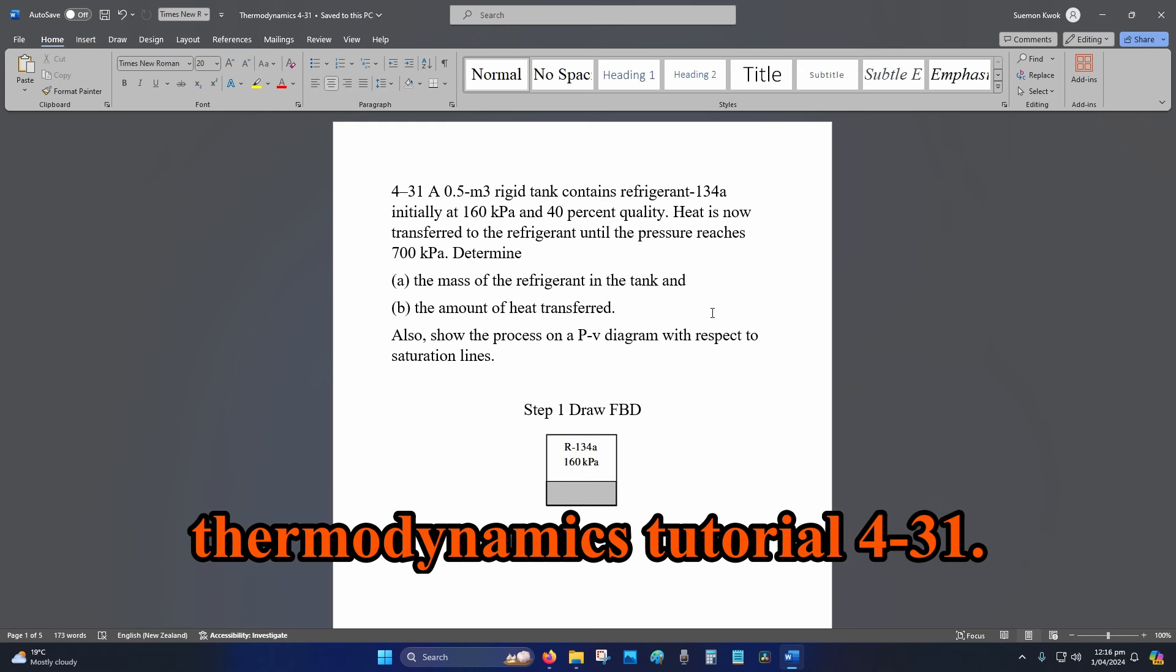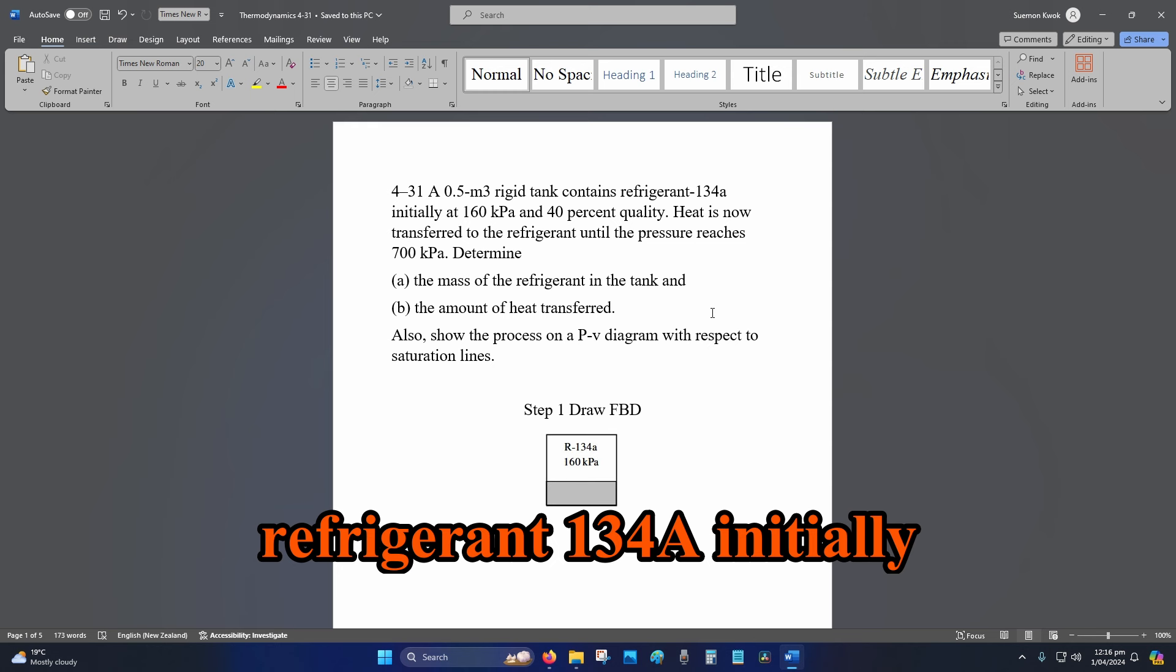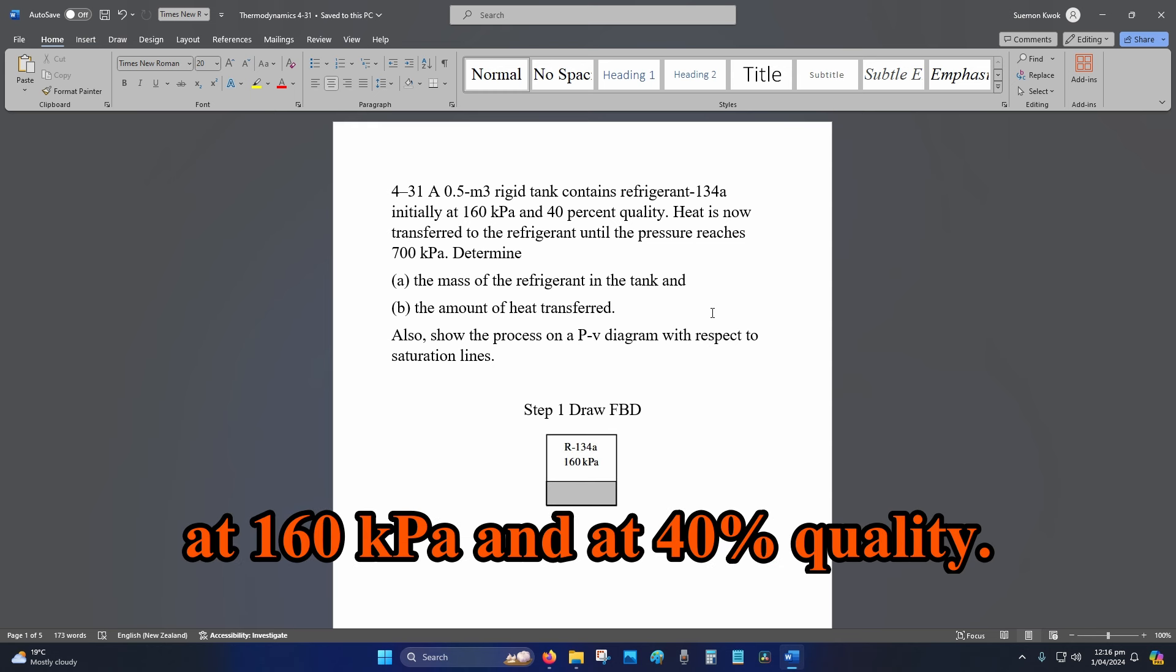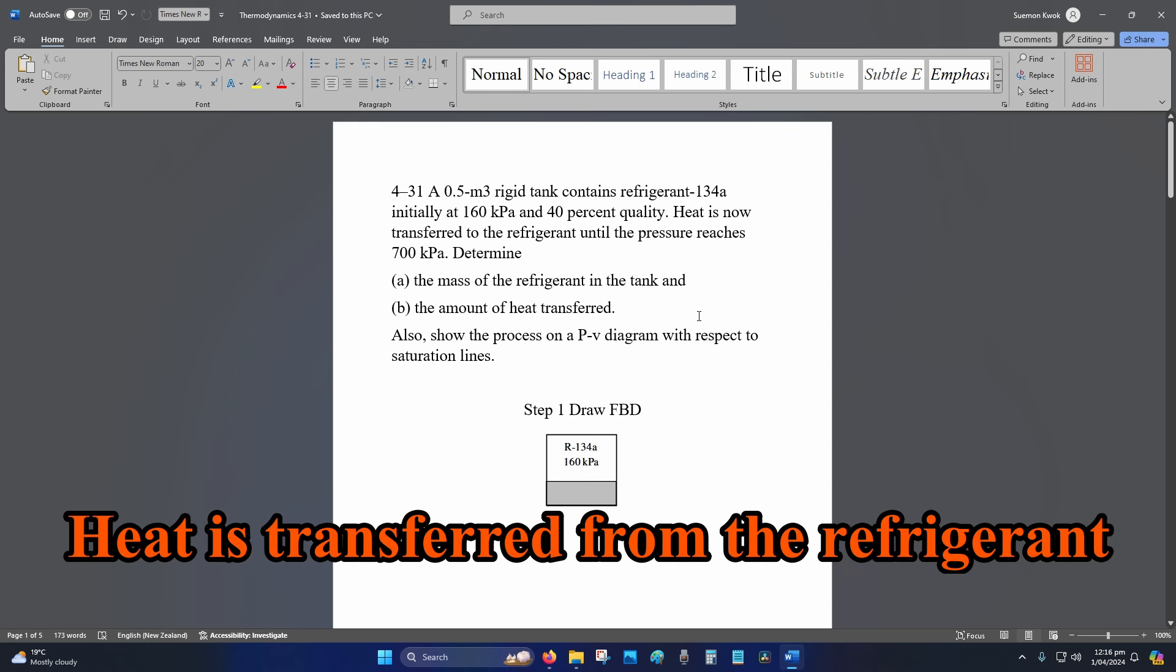Hey internet, welcome to Thermodynamics Tutorial 4-31. We have a 0.5 meter cubed rigid tank containing refrigerant 134a, initially at 160 kPa and at 40% quality. Heat is transferred from the refrigerant until the pressure reaches 700 kPa.